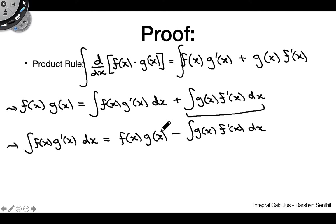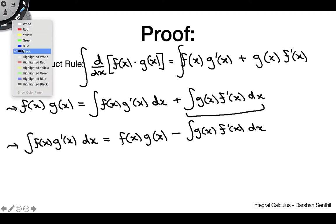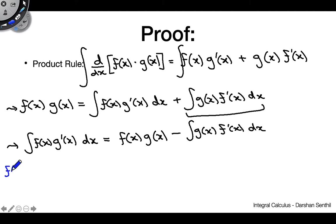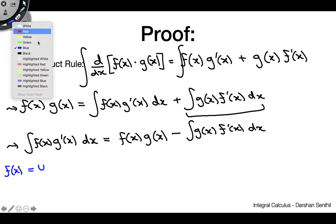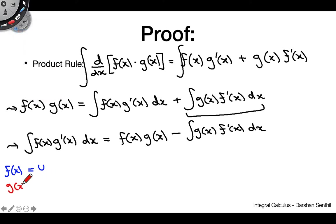What we've done is taken our product, integrated it, and put it in this form, which gives us a very nice equation we can use to solve problems. To get this into the form we see regularly, all we do is call one function f(x) as u, and the other one as v — basically to put this formula in terms we see regularly.